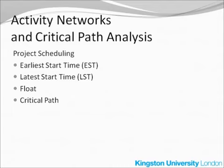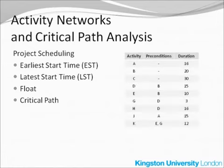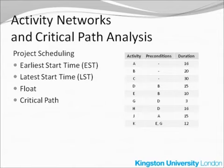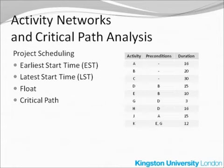To draw the activity network of the project, we need a list of all the activities. You can see them here, labeled from A to K. We usually don't use the label I, because it would be a bit confusing with J. For each activity, we determine the preconditions, or the set of other activities that must be completed before the given activity can start. As you can see, there are no preconditions for activities A, B, and C, which means these activities can start immediately after the project initiation.